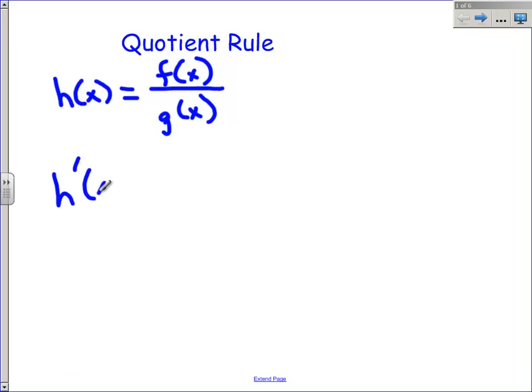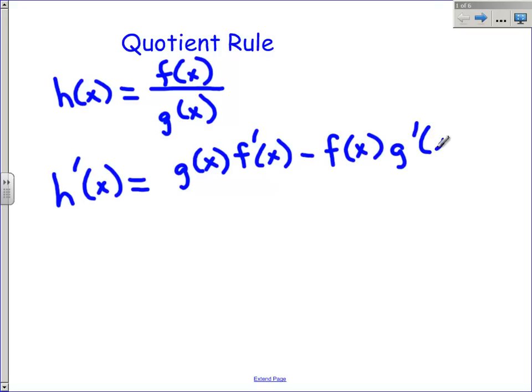So h prime of x is going to be the bottom, g of x, times the derivative of the top, that's f prime, minus the top times the derivative of the bottom. And this is all over the bottom squared. So we're just going to call that g of x squared. And it's not the derivative on the bottom, it's just g of x squared.